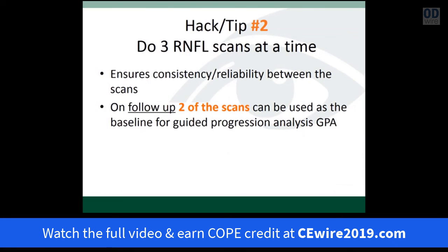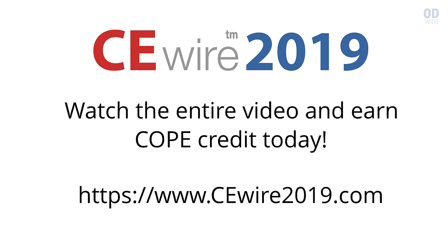Hack number two: do three scans at a time. You really want to make sure that these scans are reliable. The million dollar question is: if you're using OCT not only to make a diagnosis of glaucoma but also to identify progression, how much change do you need from visit to visit for it to be significant? The other reason to do three scans is that you can use two of those three as part of your baseline. When the patient comes back at six months or a year and you repeat the OCT-RNFL, you can use two of those scans as your baseline to determine how much change is occurring and whether this patient is getting worse.